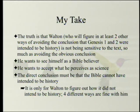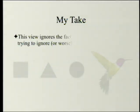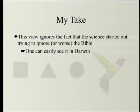It is only for Walton to figure out how it did not intend to be history, and four different ways are fine with him, even if they are possibly slightly not completely compatible with each other, because what you need is the conclusion. This view ignores the fact that the science started out trying to ignore — or perhaps worse, contradict — the Bible. And one can easily see that in Darwin. But it actually began before Darwin.